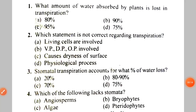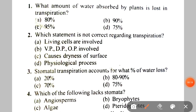First question is: what amount of water absorbed by plants is lost in transpiration? A. 80%, B. 90%, C. 95%, D. 75%. The correct answer is C — 95% of the water is lost in transpiration.